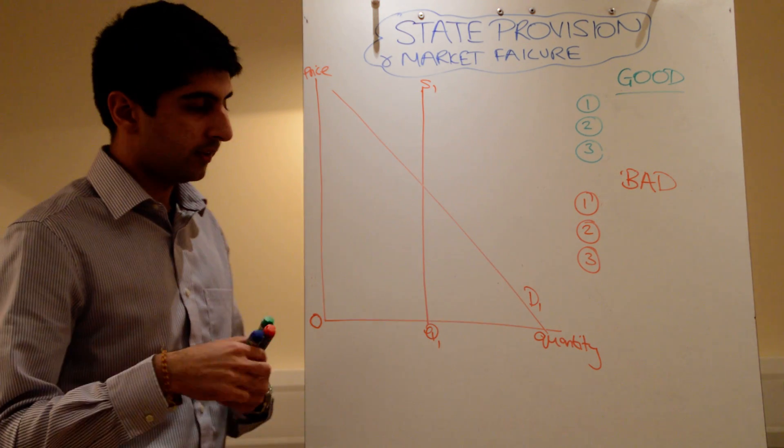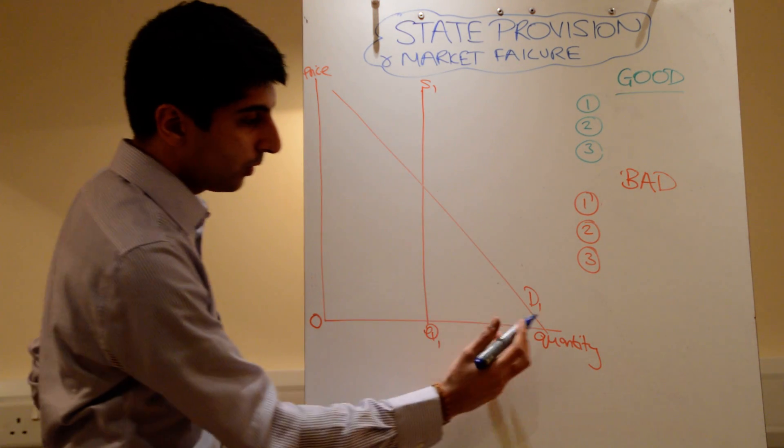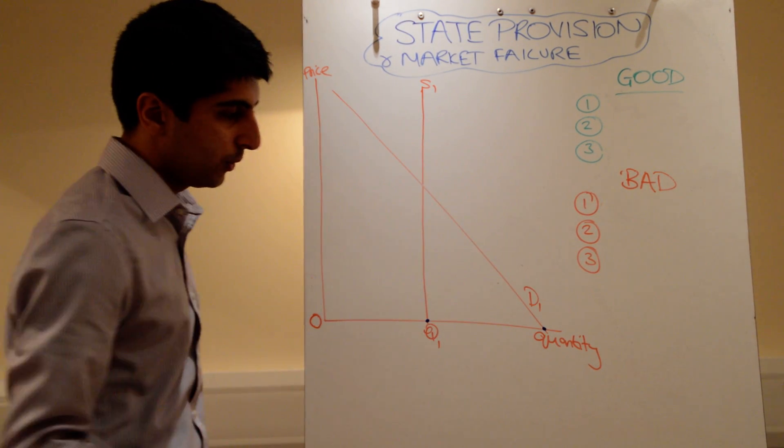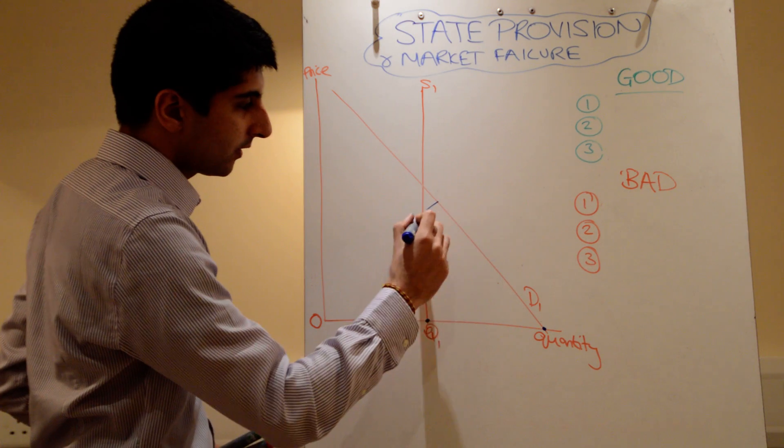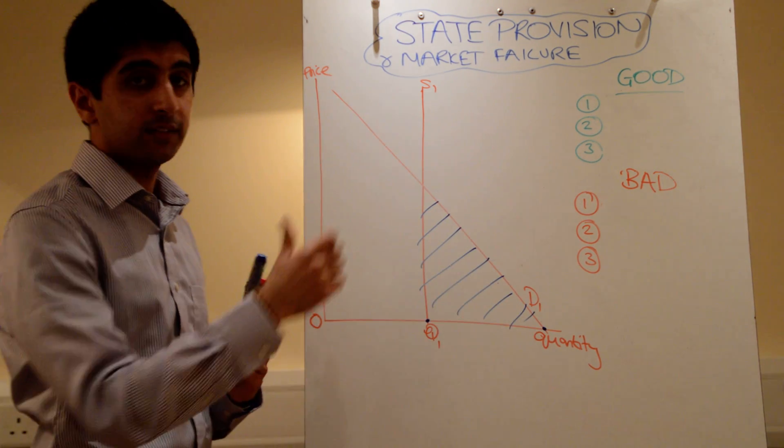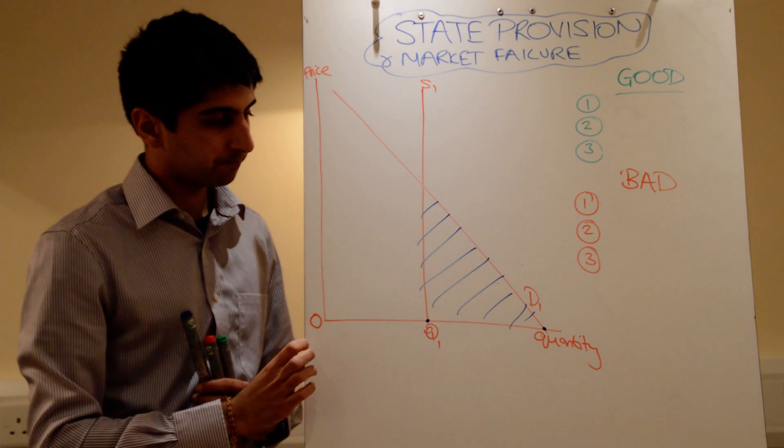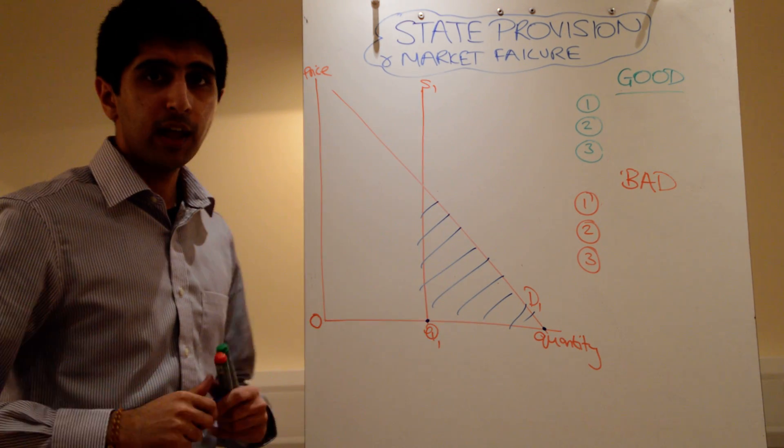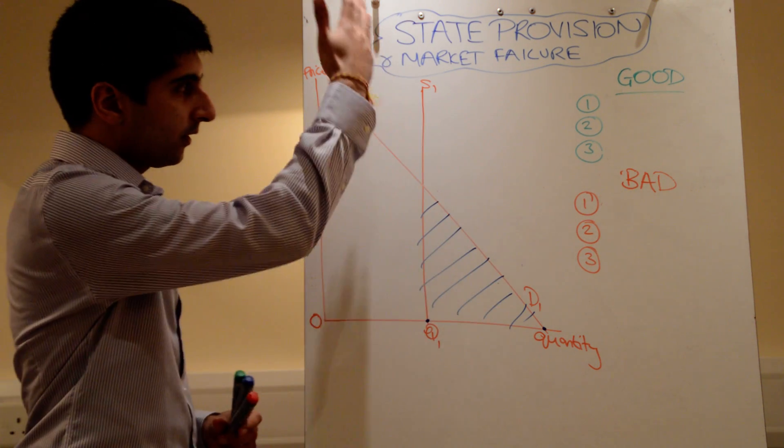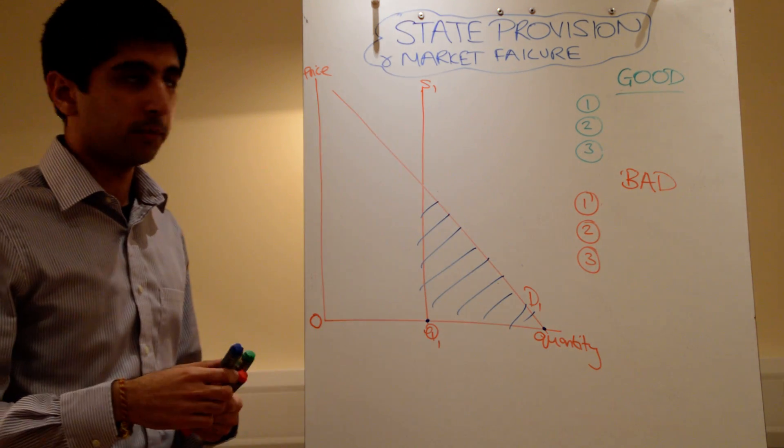So you can see what the problem is here. At a price of zero, there's our demand, but there's our supply at Q1. We have an excess demand for this good or service because the state's providing it at a price of zero. I'll come on to this as a problem in a second. But very basically this is how state provision works. The state just provides all the resources and goes from there.